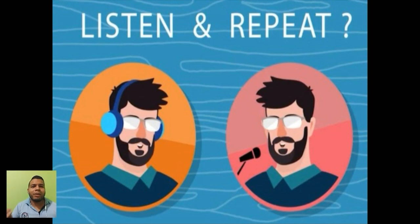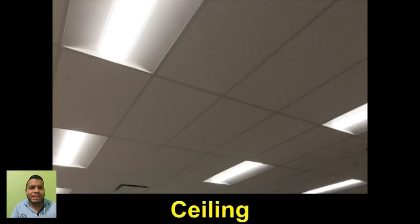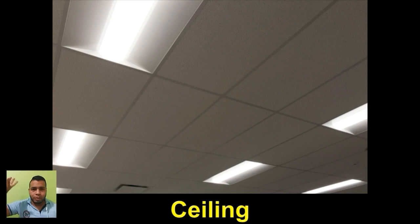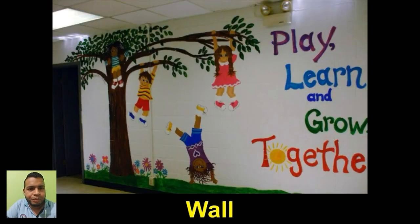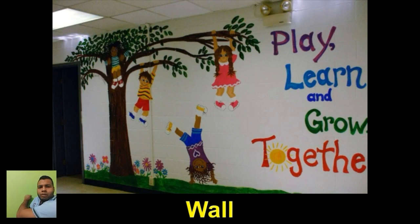Now listen and repeat. Ceiling. Ceiling es el techo, correcto? Pero el techo es la parte de adentro. La parte de afuera tiene otro nombre que es roof. Cuando yo digo ceiling hago referencia al techo. Ceiling — repeat after me. Wall.